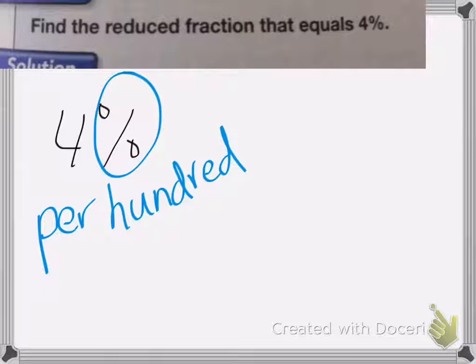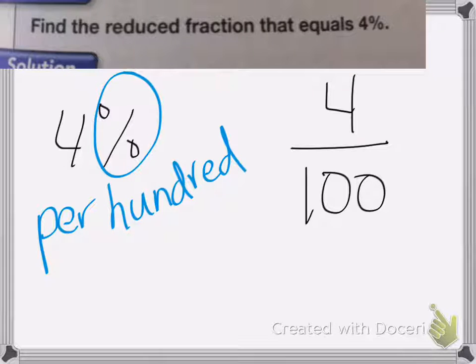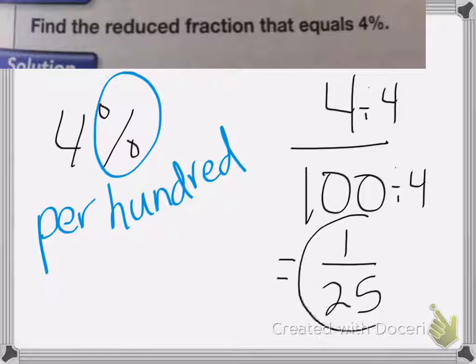So we're going to write 4 per hundred. Okay, now we need to reduce this, and I can divide both top and bottom by 4, and that equals, 4 divided by 4 is 1, 100 divided by 4 is 25. So the fraction that equals 4% is 1 twenty-fifths.